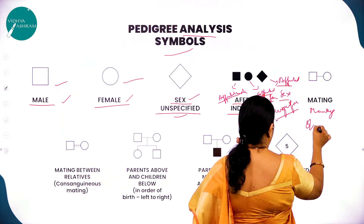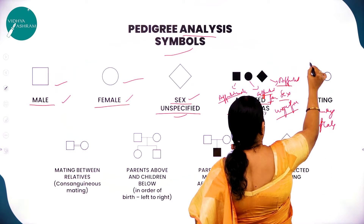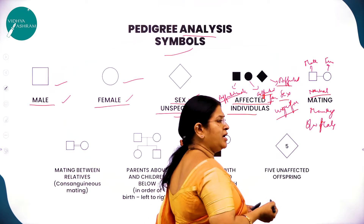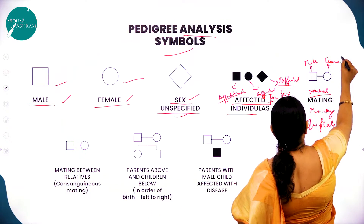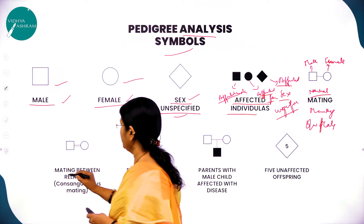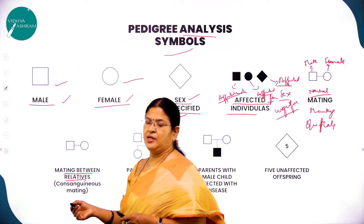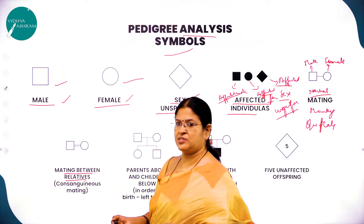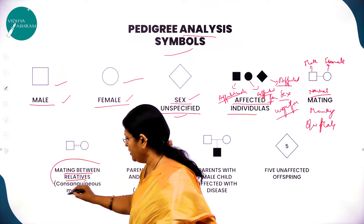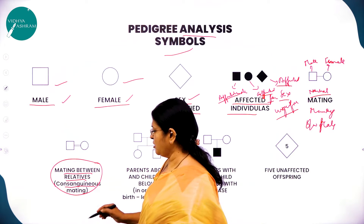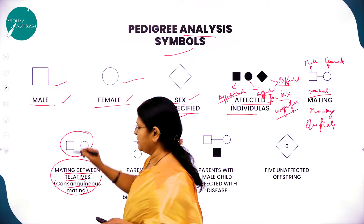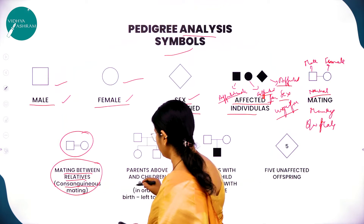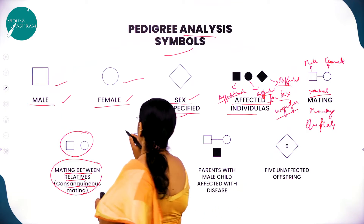Marriage or mating is shown by a horizontal line between a male and a female symbol. A normal marriage is between a normal male and normal female. Marriage between relatives — such as a mother's brother's son or a father's sister's daughter — is called consanguineous marriage or consanguineous mating, represented by a double line.